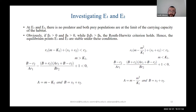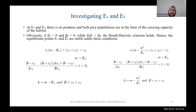E1 and E2 are similar equilibrium points because there is no predator species and both prey populations are at the limit of the carrying capacity of the habitats. We use the Routh-Hurwitz criterion to decide the stability of these equilibrium points. If these three conditions are satisfied, equilibrium points E1 and E2 are stable under these conditions.